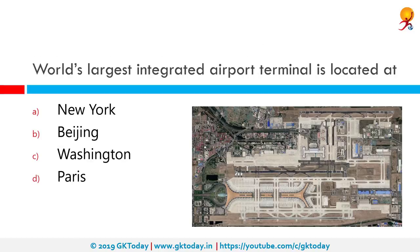The world's largest integrated airport terminal is located at Beijing. Beijing Capital Airport rapidly ascended in rankings of the world's busiest airports in the past decade, becoming the busiest airport in Asia in terms of passenger traffic and total traffic movements by 2009.